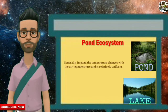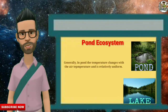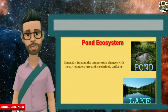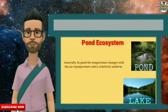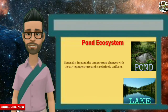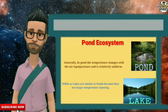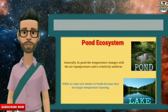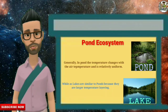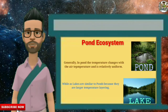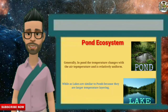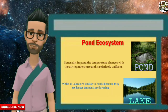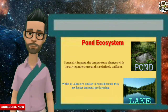Generally, in a pond the temperature changes with the air temperature and is relatively uniform. While lakes are similar to ponds, but because they are large, temperature layering or stratification takes place in summer and winter.